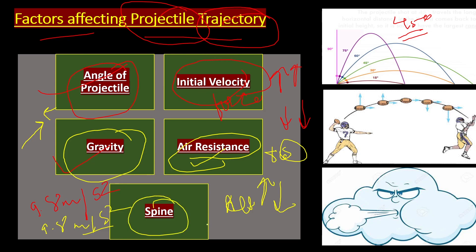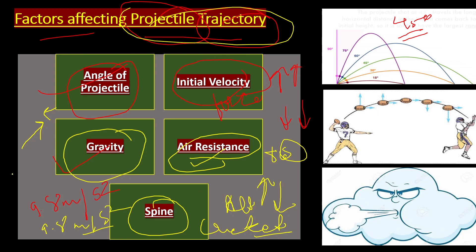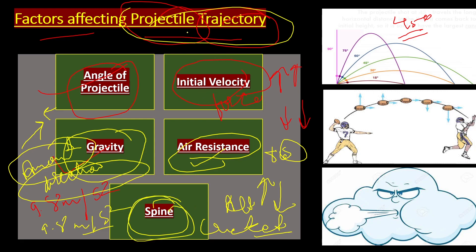Fifth factor: spin. In cricket we see spin bowlers who throw the ball with spin. If any object is thrown with spin, it also affects the projectile's trajectory. The amount and direction of spin acting on a projectile directly affects the distance that the projectile travels. The more spin applied, the greater the effect on the trajectory, and the object's speed may decrease.